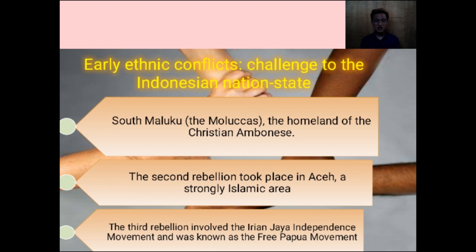The second rebellion took place in Aceh, a strongly Islamic area. The Acehnese saw the Indonesian republic as a Javanese and Minangkabau-dominated state. However, the rebellion eventually failed. The government employed both soft and hard strategies, restoring the provincial status of Aceh and appointing an Acehnese as governor. Using strong military operations and a divide-and-rule policy, the rebellion was eventually crushed. The third rebellion involved the Irian Jaya independence movement, known as the Free Papua Movement, which is recent and smaller in scale.